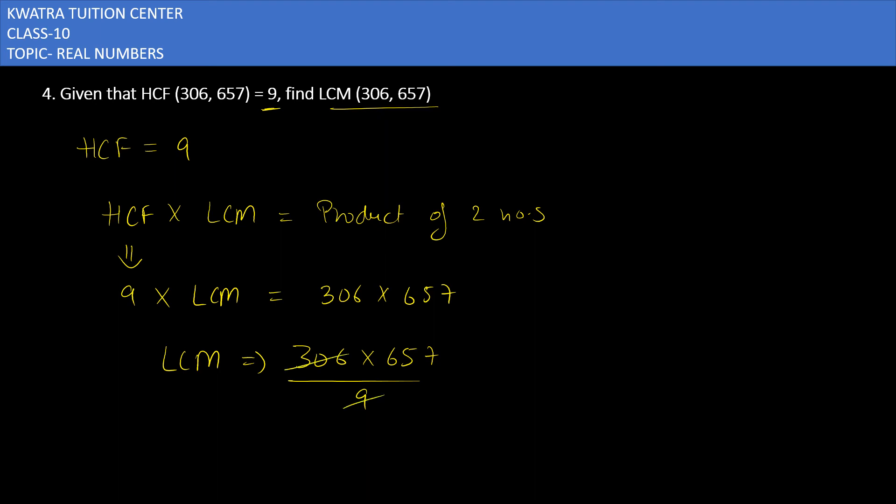It will give you 34. Then you can multiply 34 with 657, which gives you 22,338. So yes, this is the answer for the fourth one. Now moving to the fifth question.